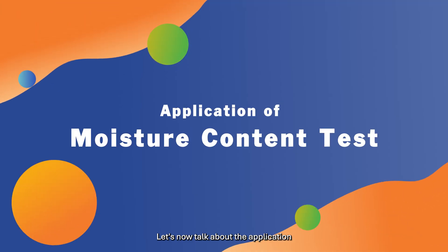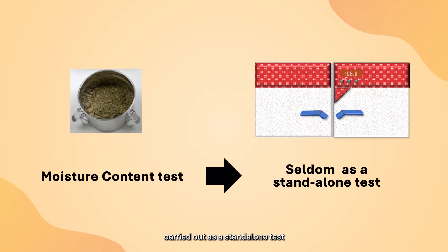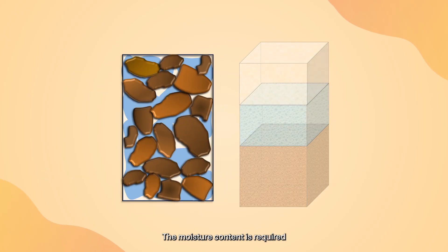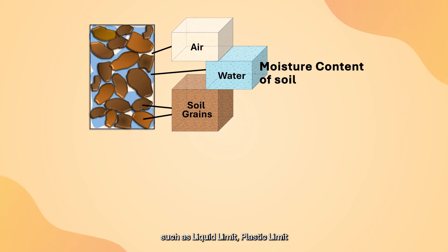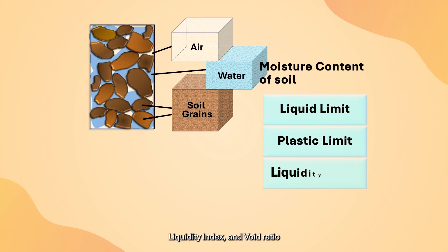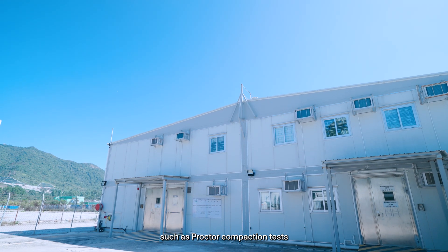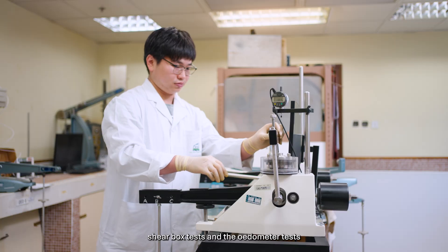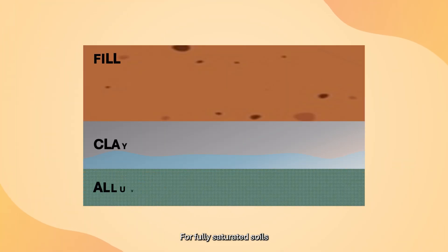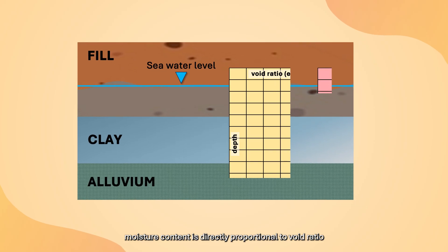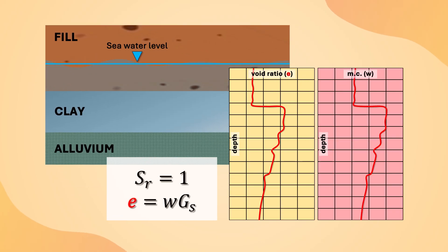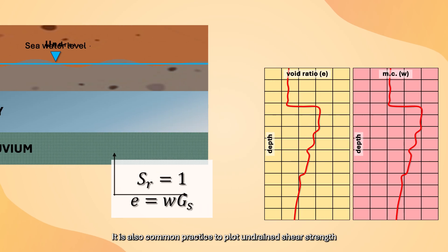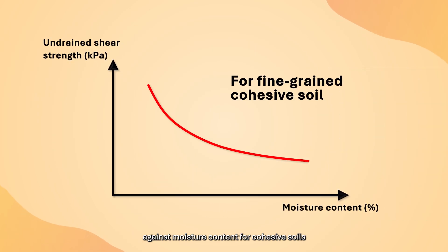Moisture content test is not commonly carried out as a standalone test. The moisture content is required in calculating values of different soil parameters, such as liquid limit, plastic limit, liquidity index, and void ratio. It is also used in many other tests, such as the Proctor compaction test, sand replacement test, triaxial test, shear box test, and the oedometer test. For fully saturated soils, moisture content is directly proportional to void ratio. It is also common practice to plot undrained shear strength against moisture content for cohesive soils.